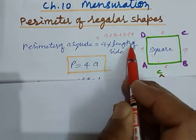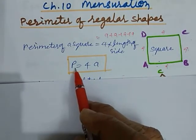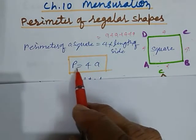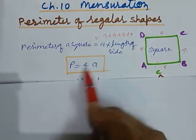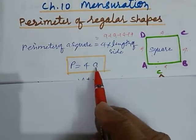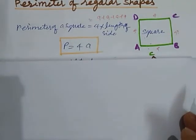That is 4 into length of side. So we direct written as perimeter equal to 4 into length of side or P equal to 4a. So this is the perimeter of a square.